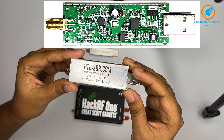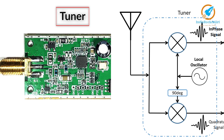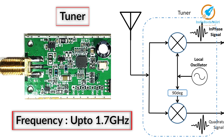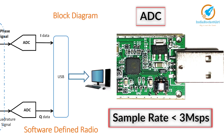The RTL-SDR has two major chips. One is a tuner, which helps tune to different frequencies — this device can work up to 1.7 GHz. The second is an analog-to-digital converter, which samples the tuned signal and provides I/Q samples to the computer. This ADC has a maximum sampling rate of 3 mega samples per second.